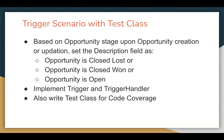For example, if you're creating any opportunity, you need to populate some value in the stage field because it is required. If it is closed won, then description should have 'opportunity is closed won'. If it is closed lost, then description will have 'opportunity is closed lost'. If the stage field is other than closed won and closed lost, then description should have 'opportunity is open'.